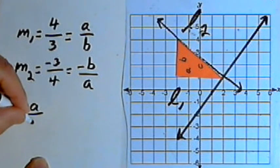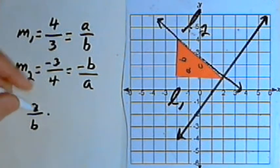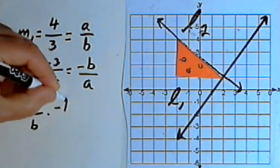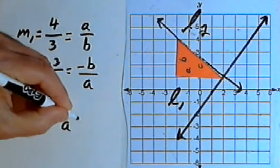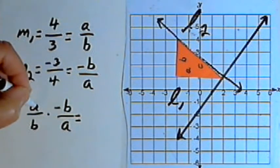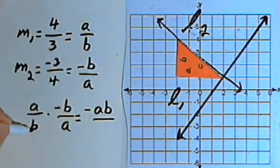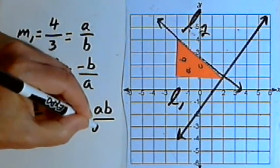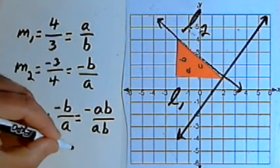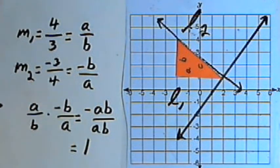If I have the slope of the first line, A over B, and I multiply it by negative B over A, multiplying the numerators, I'll get negative AB, and multiplying the denominators, I'll get AB, and that's just going to equal negative 1.